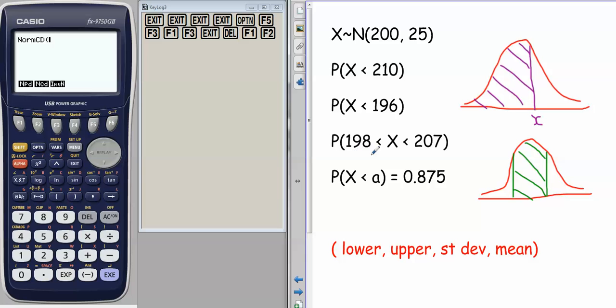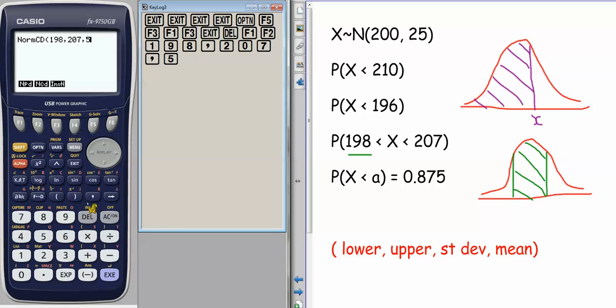For example, if I want to do 198 to 207, then I just simply put in 198, 207, then I put in the standard deviation. We're working here with X being normally distributed with a mean of 200 and a variance of 25, so the standard deviation of 5, and then a mean of 200. Close the bracket, although you don't really need to, press execute, and that gives us the answer.